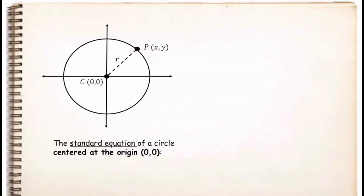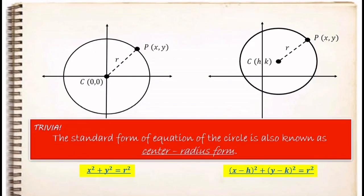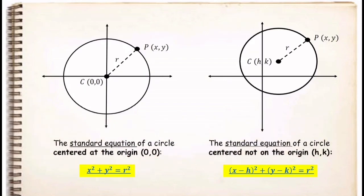So whenever you deal with a circle in standard form, you need to identify the center first. If the center is located at the origin, the standard equation is x² + y² = r², and we just replace r with its value. But if the center is not on the origin, we use (x minus h)² plus (y minus k)² = r². The standard form of the equation of a circle is also known as the center-radius form.